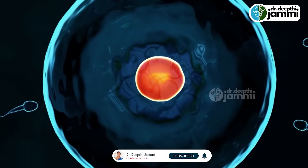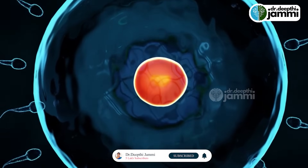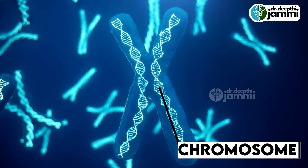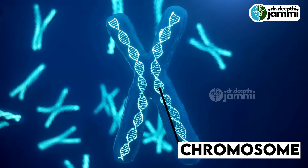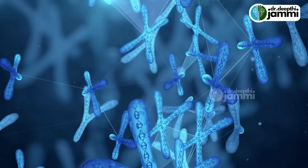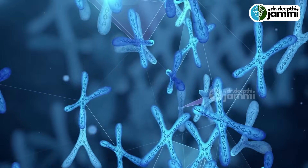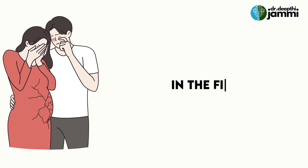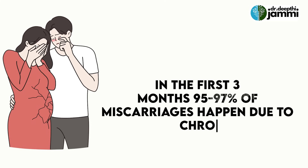We can see chromosome abnormalities in the tissues. Chromosomes are 23 from each parent, making 46 in a healthy baby. In this chromosome formation, if there is any mistake — any chromosome mismatch, extra chromosomes, or fewer chromosomes — we can see a lot of miscarriages. In fact, 95–97% of the time, miscarriages in the first 3 months are due to this reason.